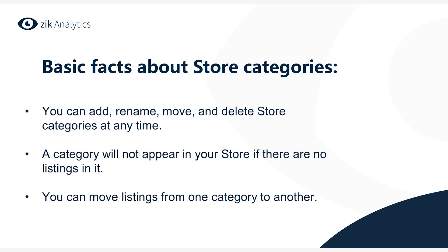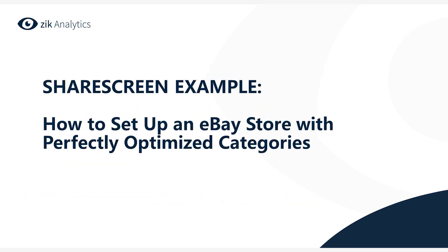A category will not appear in your store if there are no listings in it. You can move listings from one category to another. Let's now jump into the screen share example on how to set up an eBay store with perfectly optimized categories.